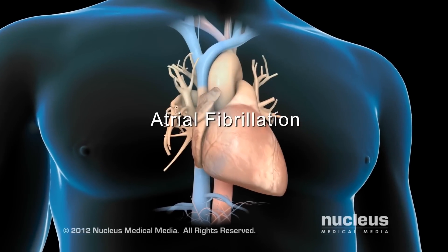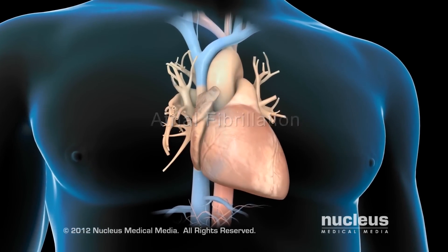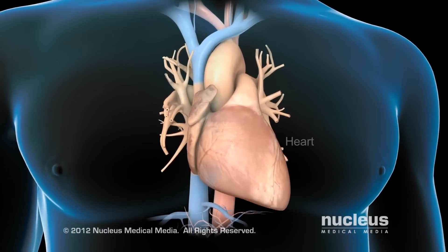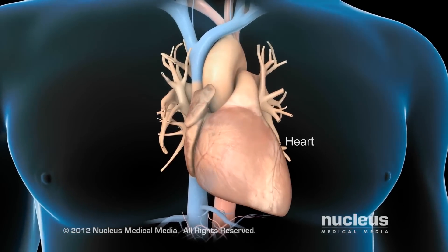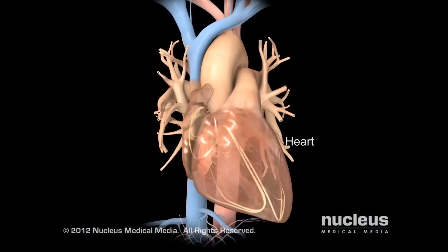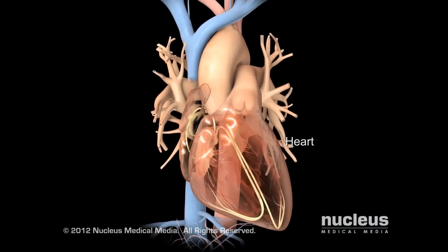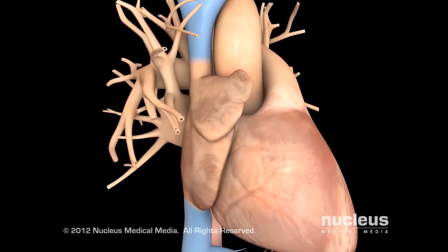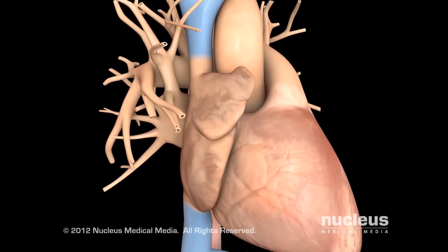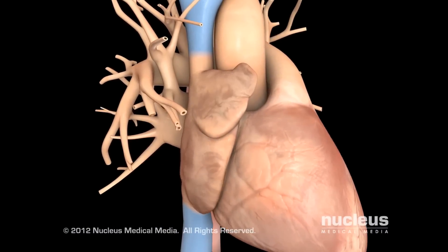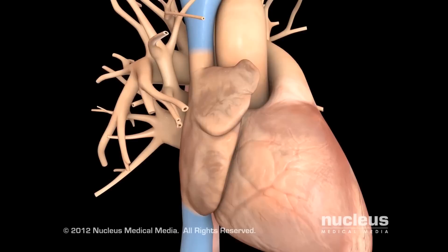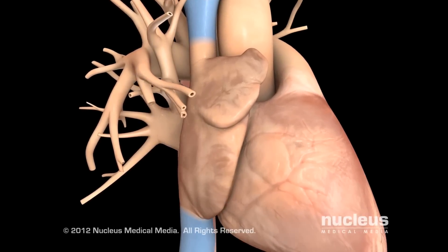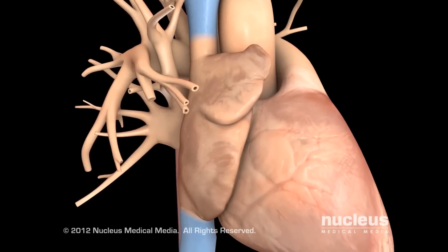Atrial fibrillation is a type of arrhythmia, which is an abnormality in the pace or force of your heartbeat. If you have atrial fibrillation, the heart's upper chambers contract in a fast, twitchy fashion, resulting in an irregular, uncoordinated heartbeat.